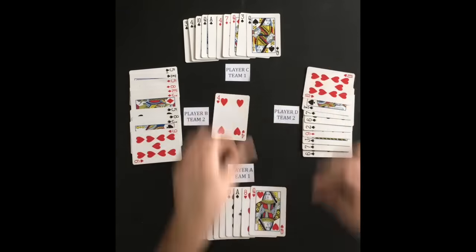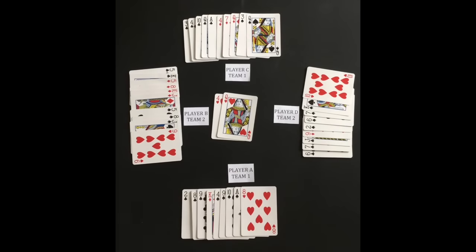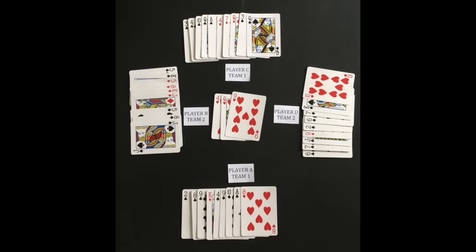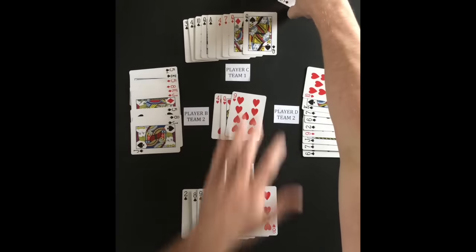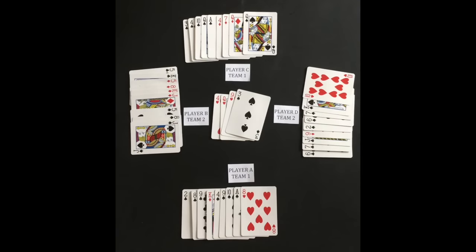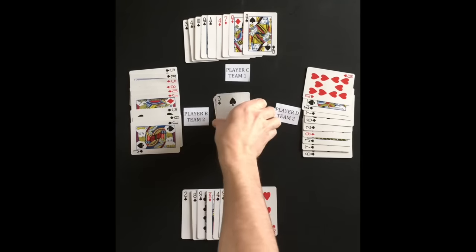Player D leads the next trick with the four of hearts. Player A and player B follow suit. Player C cannot follow suit and can play any card. Because his partner currently has the highest ranking card played, player C will play a low ranking card. Player A wins the trick.